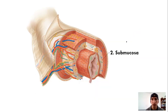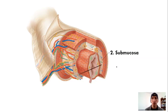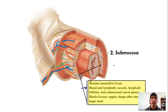The submucosa — let's take a look. More areolar connective tissue, that loose connective tissue with a lot of open spaces. This layer is also highly vascularized: blood vessels, lymphatic vessels, nerve endings, lymphoid follicles, and a submucosal nerve plexus — so this is our vascular layer. The submucosa also contains elastic fibers, which allow an organ like the stomach to regain its shape and recoil after expanding to accommodate food contents.